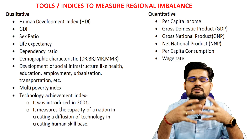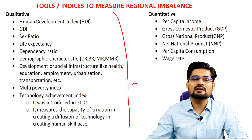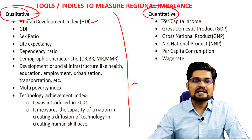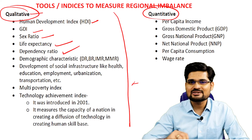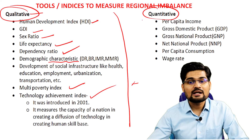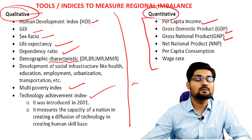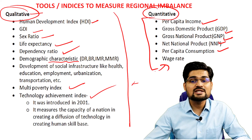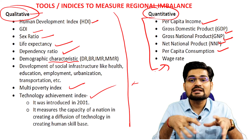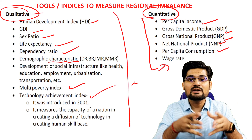Various tools, measures, and indices are used for assessing regional imbalance. Qualitative tools and indices include HDI, GDI, sex ratio, life expectancy, dependency ratio, demographic characteristics, multi-poverty index, technological achievement index, and happiness index. Quantitative tools involve specific numbers: per capita income, GDP, GNP, NNP, per capita consumption, and wage rate. These calculations have to be done in order to assess regional imbalance or regional disparity in a particular country, region, or location.